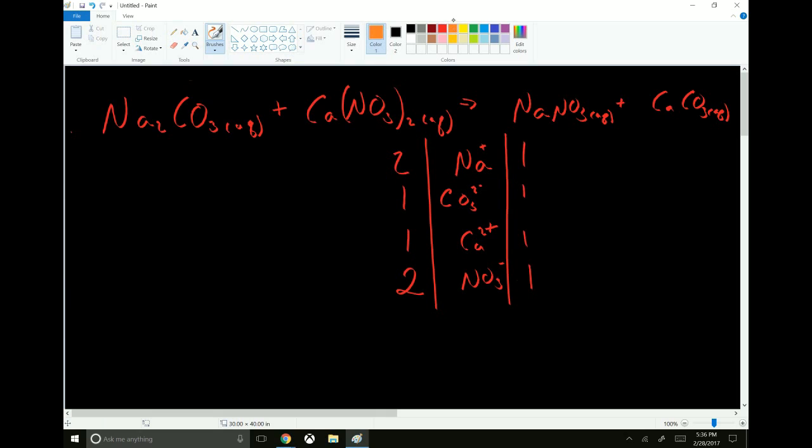All we need to do to balance this equation is double the moles of sodium nitrate. You double that, we get 2 sodium ions on the right and 2 nitrate ions on the right. That simplifies the bookkeeping just a little bit.